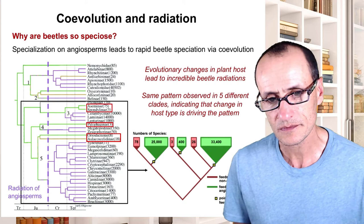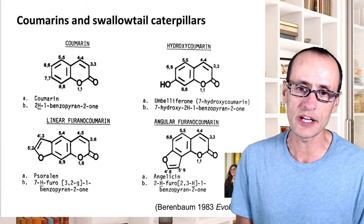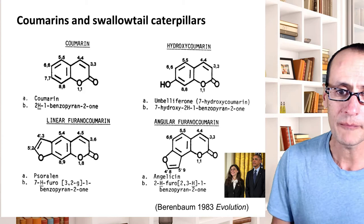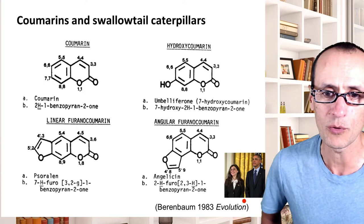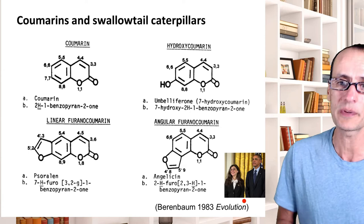One person who made incredible insights in this area was Professor May Berenbaum, who was a young faculty member at the University of Illinois. She is shown here in a picture from 2014 next to President Barack Obama, when she received the Presidential Medal of Science, in large part because of her contributions to understanding the evolution and diversification of insects.